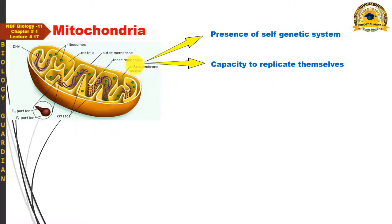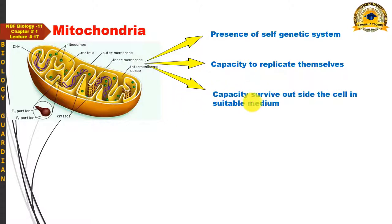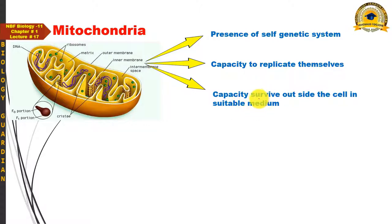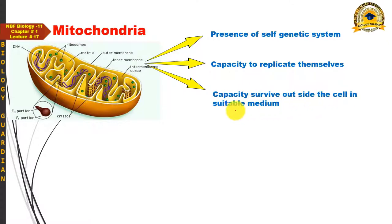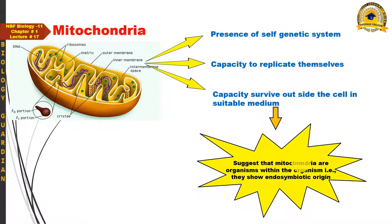Another interesting feature: if mitochondria are carefully fractionated — removed from the cell and provided a suitable medium — they can survive outside the cell and show their activity. This capacity to survive outside the cell in a suitable medium is another characteristic property of mitochondria.